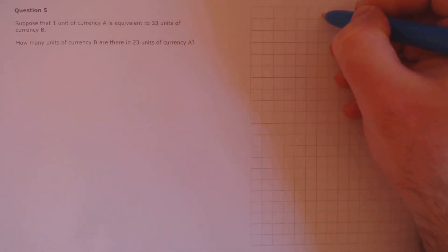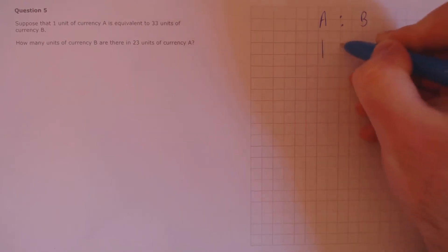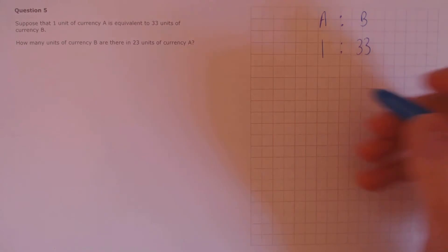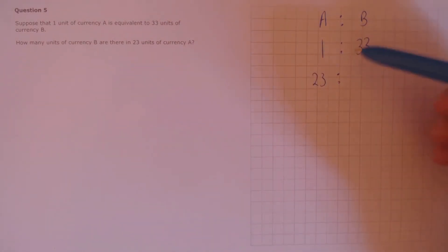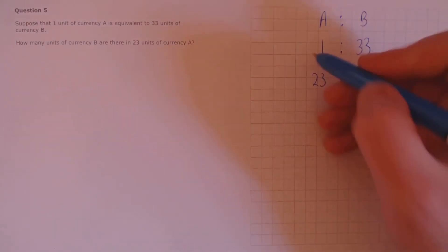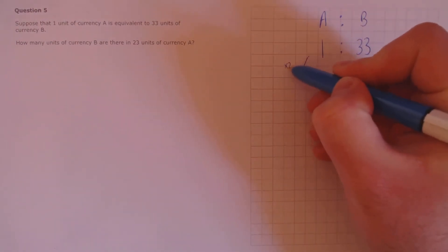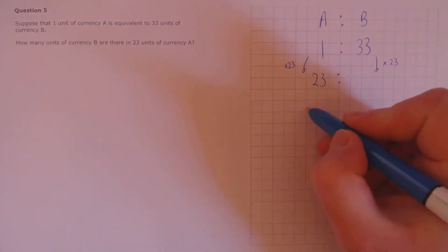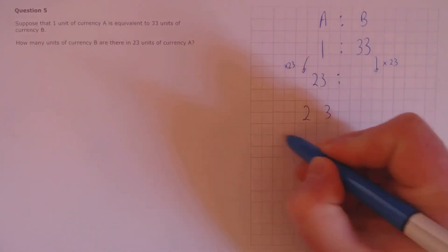Question 5. Suppose that one unit of currency A is equivalent to 33 units of currency B. How many units of currency B are there in 23 units of currency A? Let's look at the ratios, 1 to 33. This side must have been multiplied by 23. 1 times 23 is 23, so to get the equivalent amount of units of currency B, we need to multiply 33 by 23.